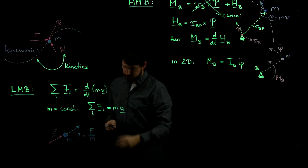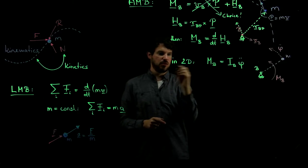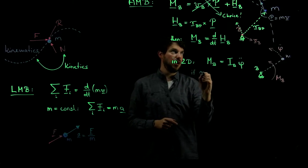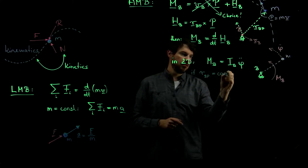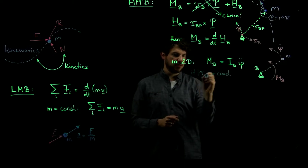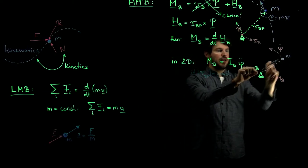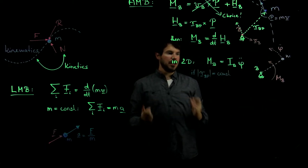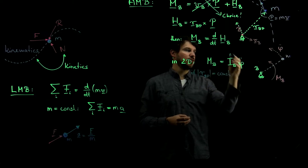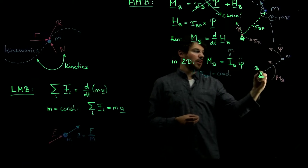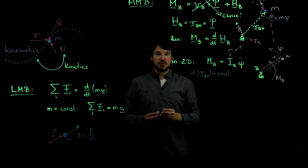We should be careful though: this only holds in 2D if the distance from B to the particle is fixed — that is, if the distance R from B to P is constant. For example, if you have your particle on a rod of fixed length, this is the equation that holds. In this particular case, Ib is nothing else but the mass of the particle times this radius squared. That's a very neat relation.